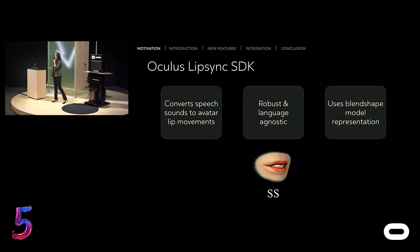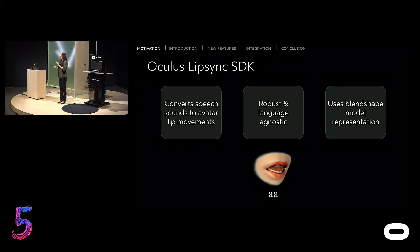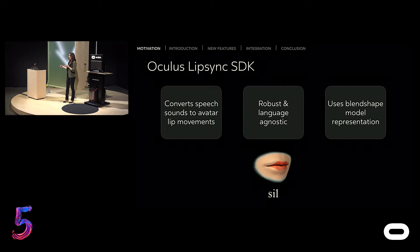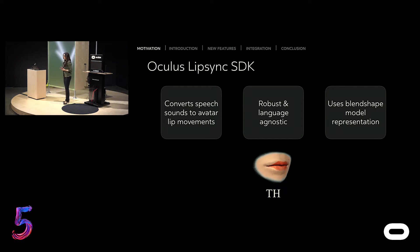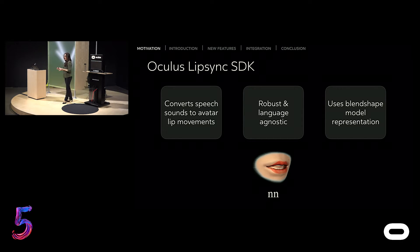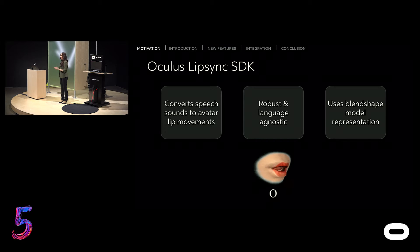The different mouth shapes for each sound unit are called visemes. The way to represent visemes in computer animation is blend shapes. Blend shapes define how the 3D geometry of your avatar is shaped. And if you mix and match different blend shapes, or different visemes, you can animate speech continuously and smoothly.